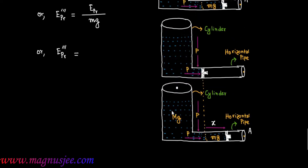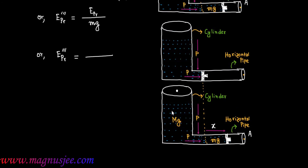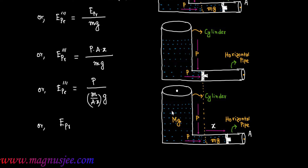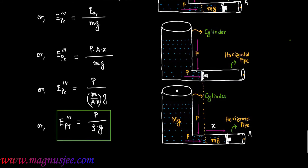In place of EPR we can write x · P · A, where P is the pressure difference, A is the area of cross section of the horizontal pipe, and x is the displacement of the liquid. So EPR triple prime equals P divided by (M/Ax) · G, which simplifies to EPR triple prime equals P divided by rho · G.